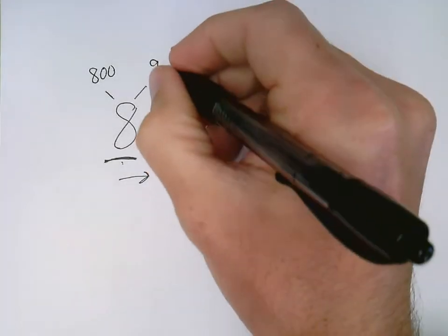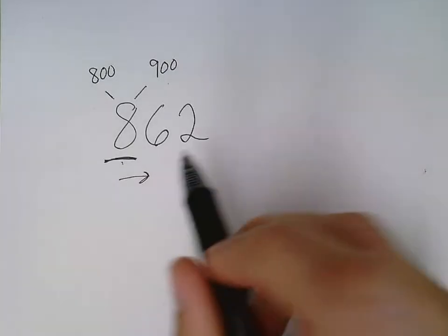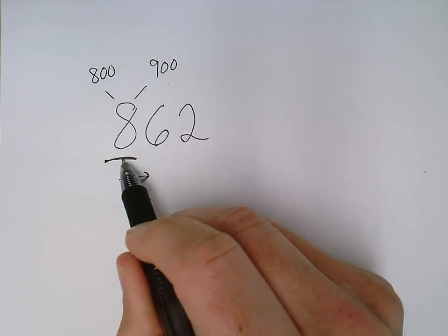And if my 8 goes up to a 9, my answer is going to be 900. To figure out if my underlined digit is going to go up or stay the same,